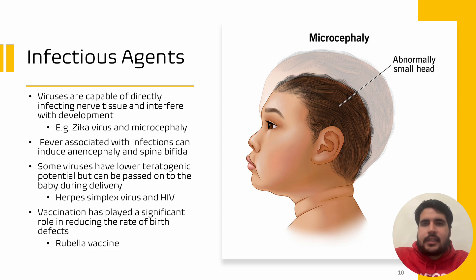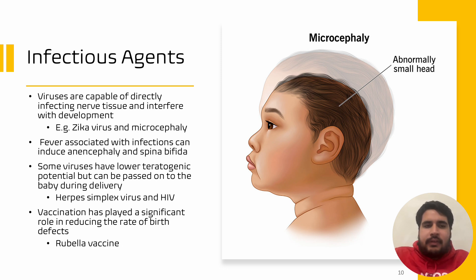Now we can move on to discussing infectious agents. Infectious agents include viruses, and viruses are capable of directly infecting nerve tissues and interfering with the development of the nervous system. For example, the Zika virus has been shown to cause microcephaly. Secondly, fever associated with a viral infection in the mother causes hyperthermia, and hyperthermia has been shown to induce neural tube defects and other defects of the central nervous system. Thirdly, some viruses are not highly teratogenic themselves but can be passed on to the baby during delivery — these viruses include, for example, HIV.